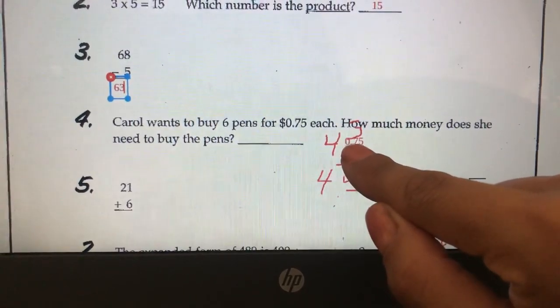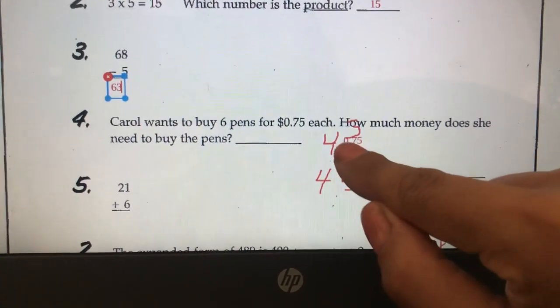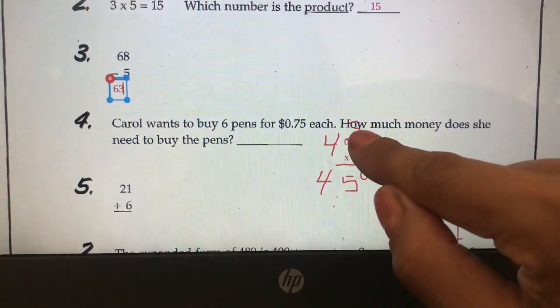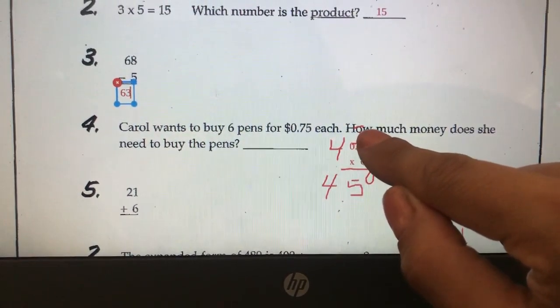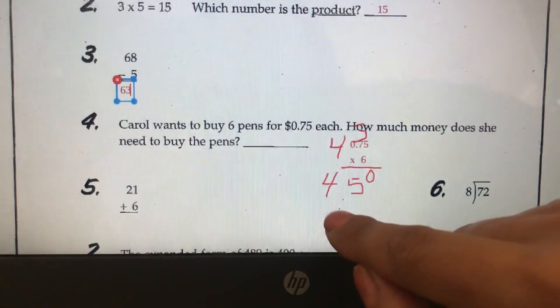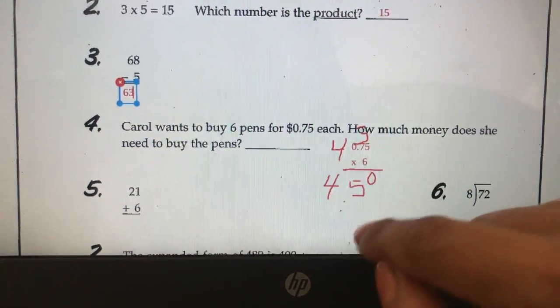6 times 7 is 42, and now we add that 3. So, 42 plus 3 is 45. So, she would need $4.50.